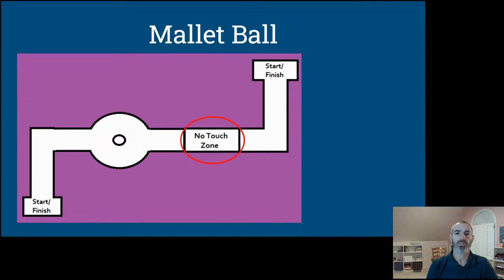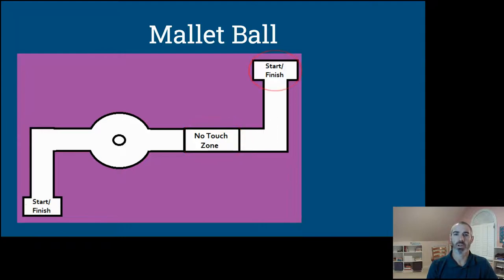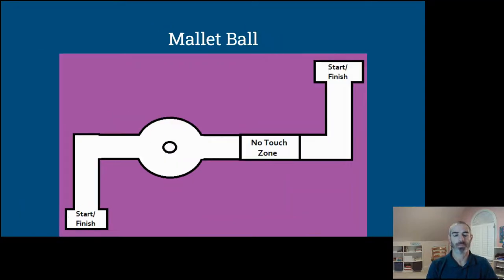Then you're going to reach the no-touch zone, which means you're not allowed to touch the rubber mallet to the bowling ball, and you're going to pay attention to its motion. Once it exits the no-touch zone, you're going to make a left-hand turn and then stop the bowling ball in the start-finish box at the end.